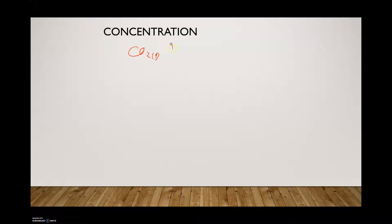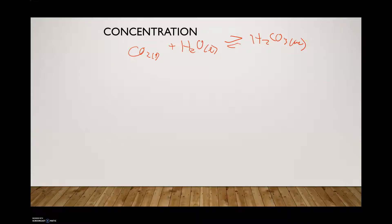Concentration is by far the easiest to predict which direction the equilibrium is going to shift. If we look at an example where CO2 gas reacts with liquid water to form carbonic acid, and we increase the concentration of CO2 gas — CO2 is present as a reactant — the left side is now going to be out of sync, out of equilibrium with respect to the product side.